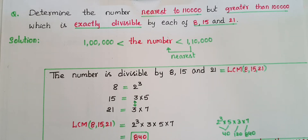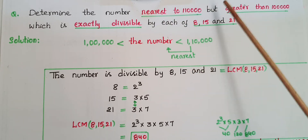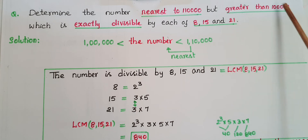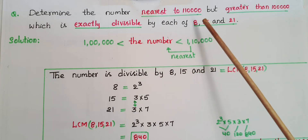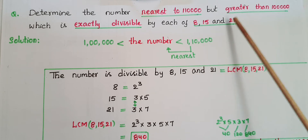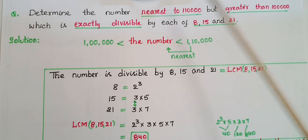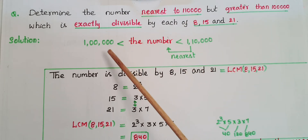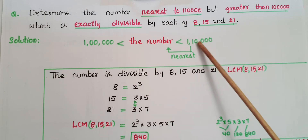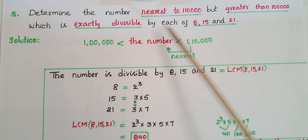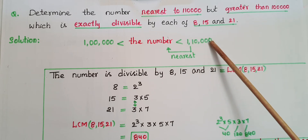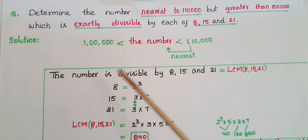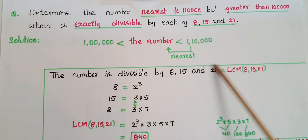Hello everyone. Today I am going to tell the solution of a problem which is based on LCM. The problem is: determine the number nearest to one lakh ten thousand but greater than one lakh, which is exactly divisible by each of 8, 15, and 21. So here we have to find the number which is greater than one lakh and nearest to one lakh ten thousand — meaning it is between these two numbers but nearest to one lakh ten thousand, and divisible by these three numbers.